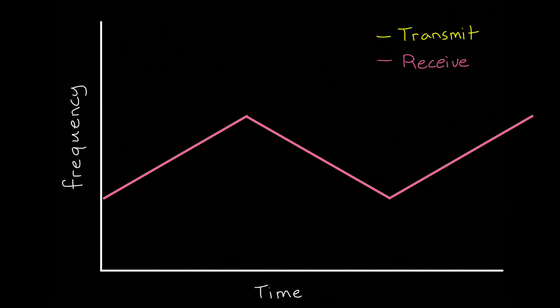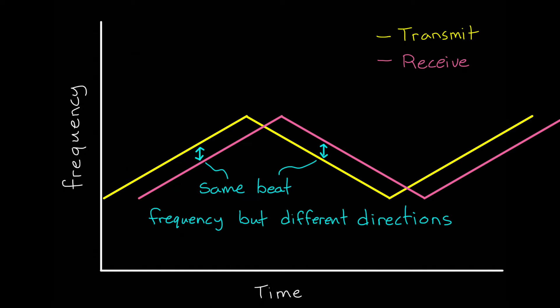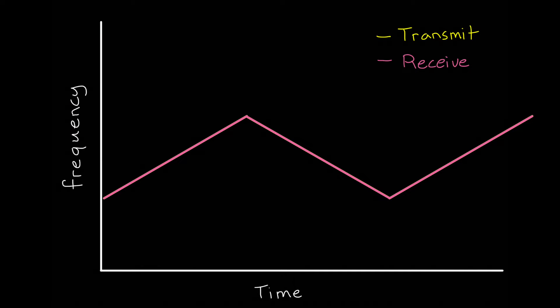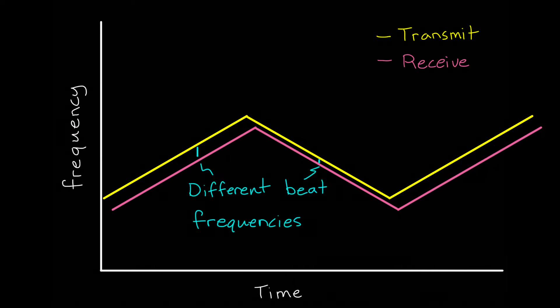And when an object is at a distance but not moving, then both the rising and falling sides are delayed in time. This again produces two different beat frequencies, one that looks like a positive Doppler and one that looks like a negative Doppler. Again, those cancel out, and we can determine that the object is not moving. Plus, by looking at these two beat frequencies, we can separate Doppler from range with any combination of the two.